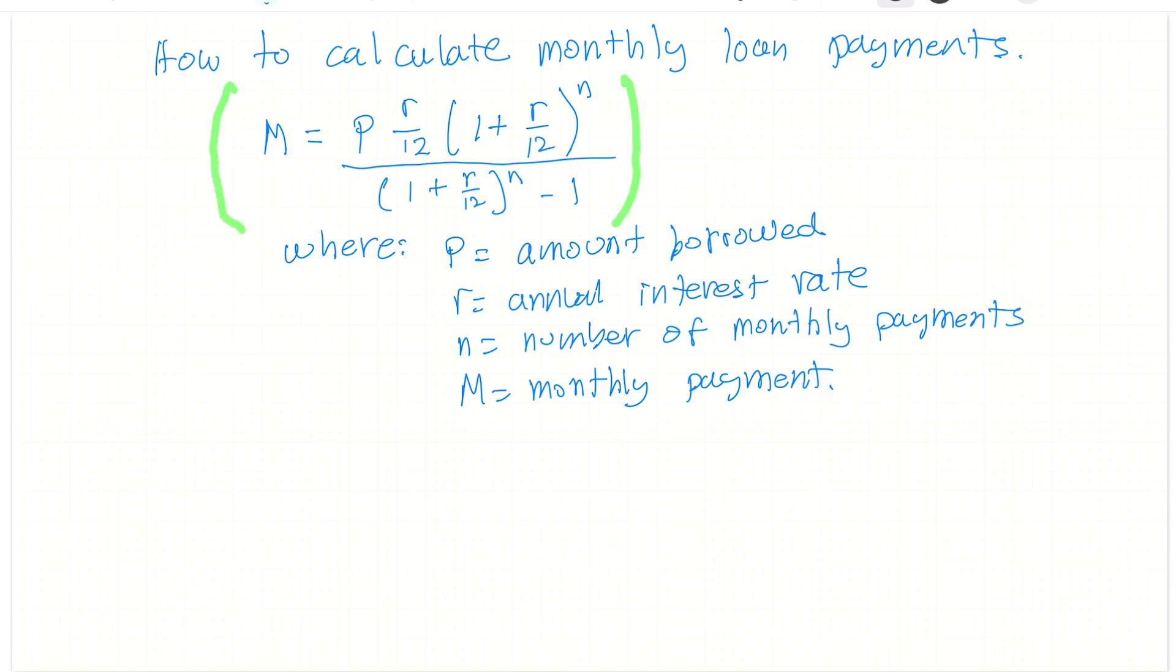And what we have, the basic inputs to this equation are the amount borrowed, that's the P number, how many thousands you're borrowing. And then this is the annual interest rate, the R.